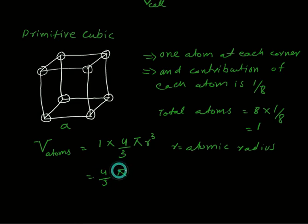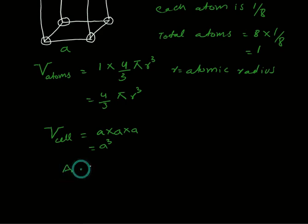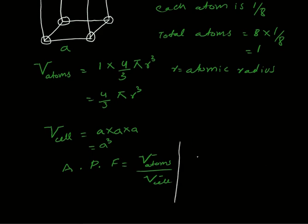So the volume of atoms contributing to the unit cell is 4/3 π r³. Volume of the unit cell is lattice constant A × A × A, which equals A³. Atomic packing fraction equals 4/3 π r³ divided by A³.